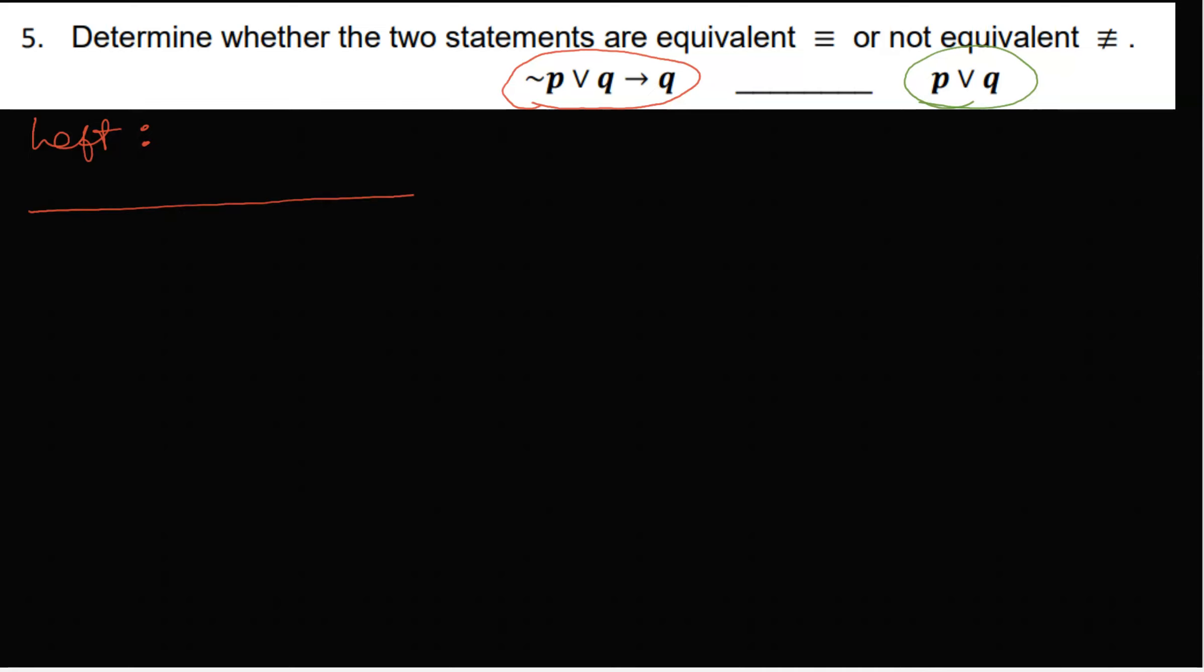So on the left-hand side we are looking at P, Q, not P, not P or Q, and then not P or Q imply Q. So that is the left-hand side.